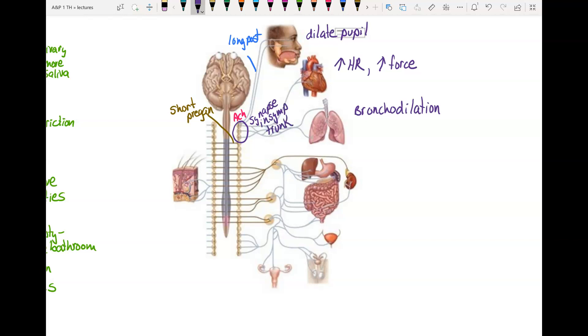This next set of nerves pass through the sympathetic trunk, but they don't synapse there. Instead, they synapse in a prevertebral ganglia. These nerves that synapse in a prevertebral ganglia are called splanchnic nerves.